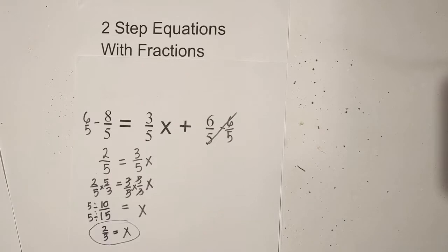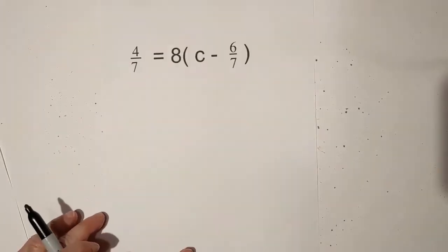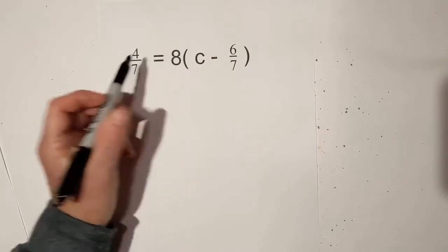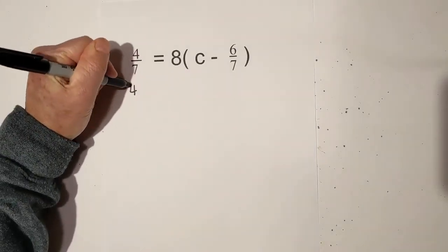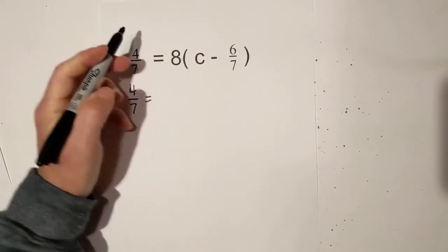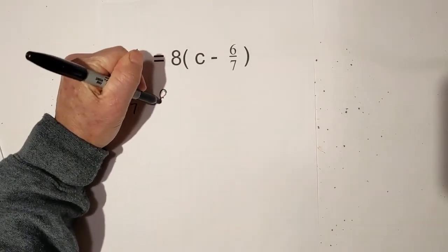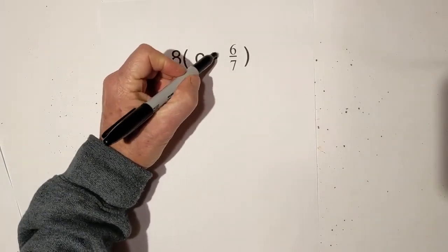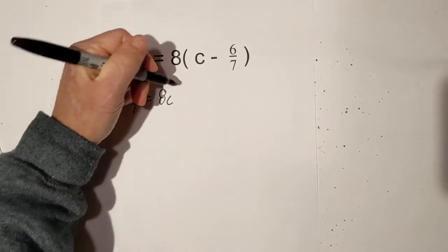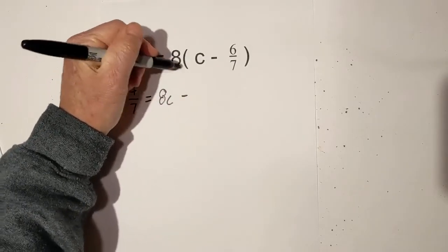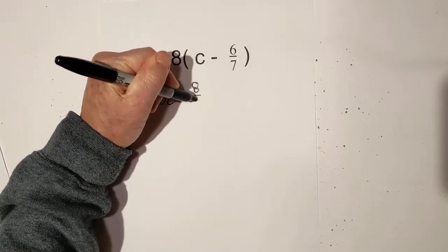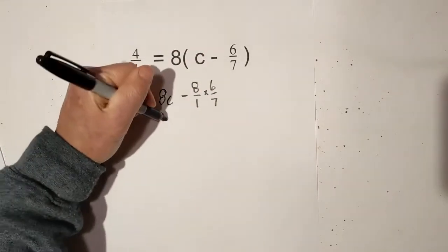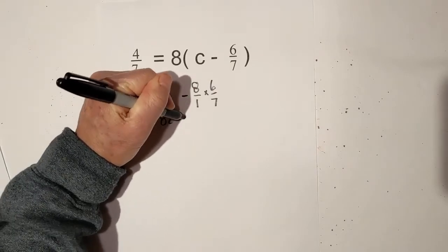Let's complete another one. Now this one, let's get started. The first thing we need to do is distribute the eight. So I'm going to bring down the four-sevenths because we're going to distribute. Eight times c is eight c. Now when we distribute the eight times the negative six-sevenths, remember you are multiplying it by eight over one. So it'll be eight over one times six over seven.